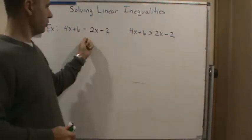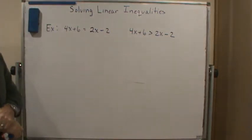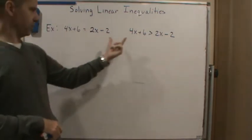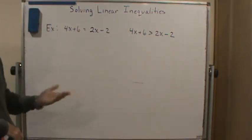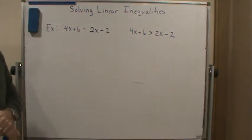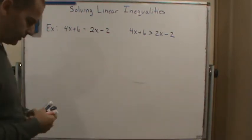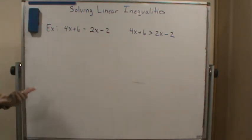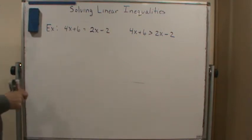So let's do an example, and I'll show you what I mean between the difference of the two solutions. I've got two linear expressions set up. One is an equation. I've got the exact same thing set up, but instead of using an equal sign, I'm using an inequality. So I'm going to solve both of these and show you the difference in how we would show the solution.